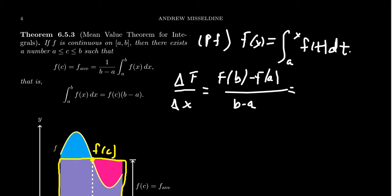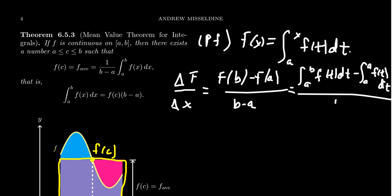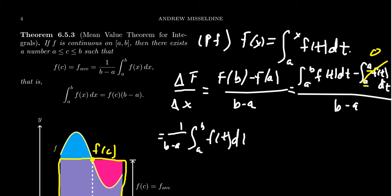Since capital F is itself an integral, F of b is the integral from a to b of f of t dt, and F of a is the integral from a to a of f of t dt — which is zero. So the numerator is just the integral from a to b, and we get 1 over b minus a times the integral from a to b of f of t dt. This is the average value of f — so the average rate of change of capital F, the antiderivative of little f, is the average value of little f.